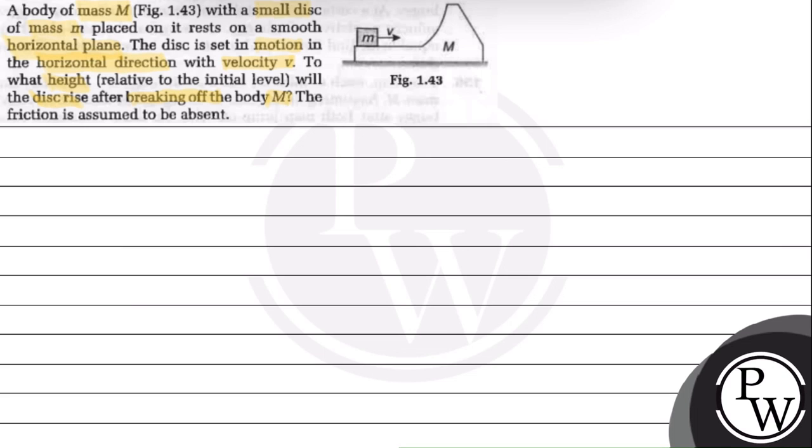In this question, when the disc of mass small m breaks off the body capital M, it will have two velocities: in positive x-direction and positive y-direction. We will assume the velocity in positive x-direction as vx-dash and y-direction velocity as vy-dash.